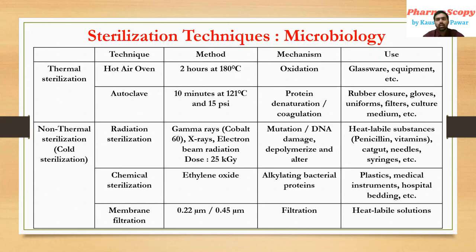Any parenteral formulation should be sterile, so what are all the sterilization techniques to get a sterile product? Sterilization techniques are broadly classified into two categories: first, thermal sterilization, and second, non-thermal sterilization, also called cold sterilization, because heat is not used in that process. In thermal sterilization we have two techniques: hot air oven and autoclave.